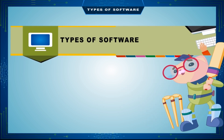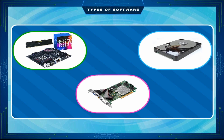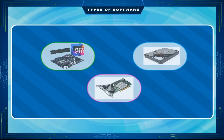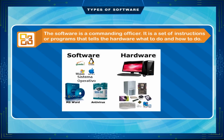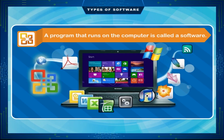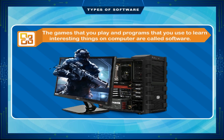Types of software. Hardware cannot work by itself. It needs step-by-step instructions. They are like an army that needs a commanding officer. The software is a commanding officer. It is a set of instructions or programs that tells the hardware what to do and how to do. A program that runs on the computer is called software. The games that you play and programs that you use to learn interesting things on computer are called software.